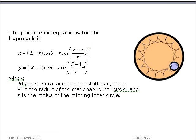And here are the parametric equations for the hypocycloid. They look just like the equations for the epicycloid, except the plus sign in the epi becomes this minus sign in the hypocycloid. Theta is the central angle of the stationary circle. Big R is the radius of the outer, of the stationary circle. And little r is the radius of the rotating inner circle in the case of the hypocycloid.